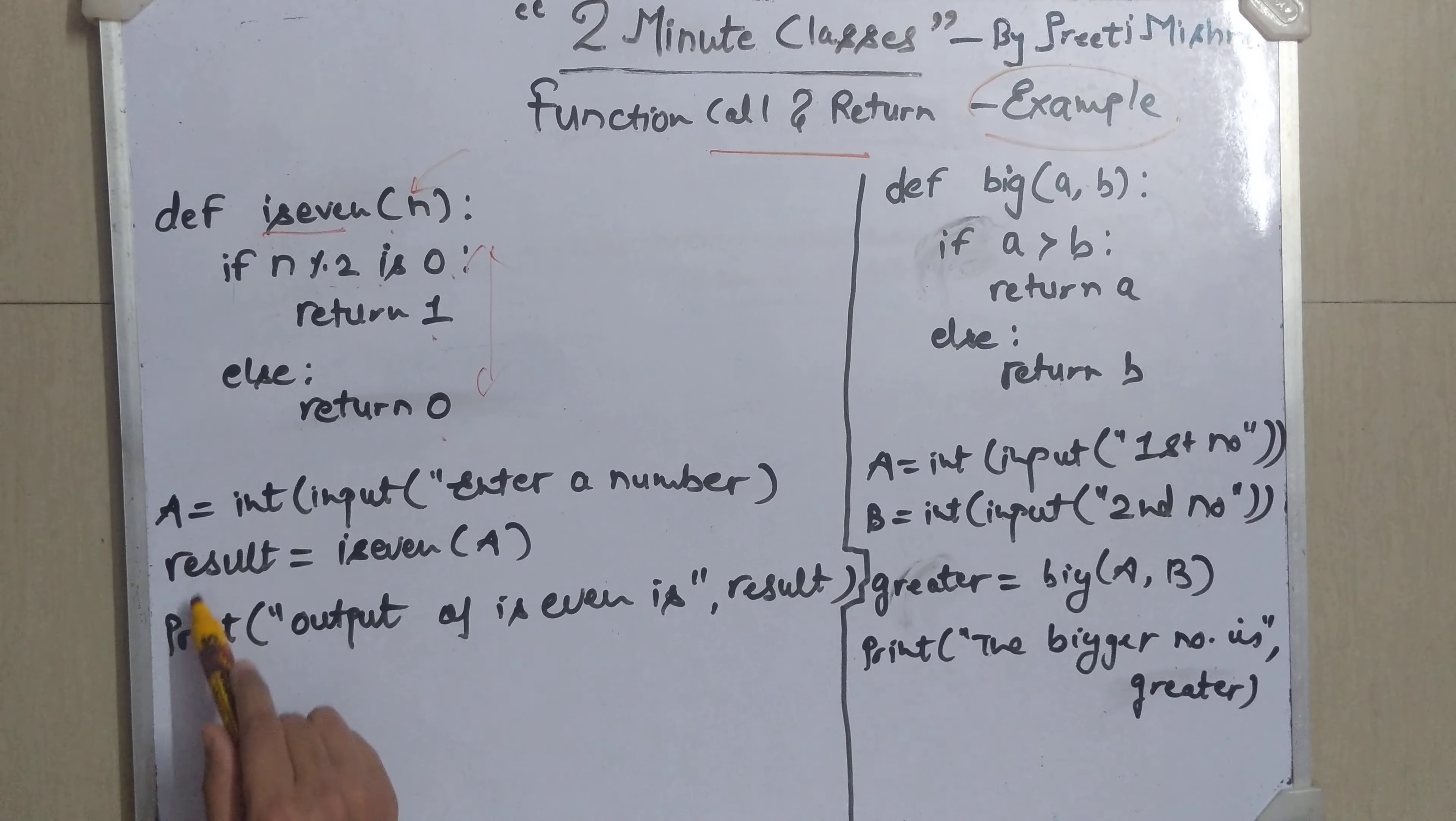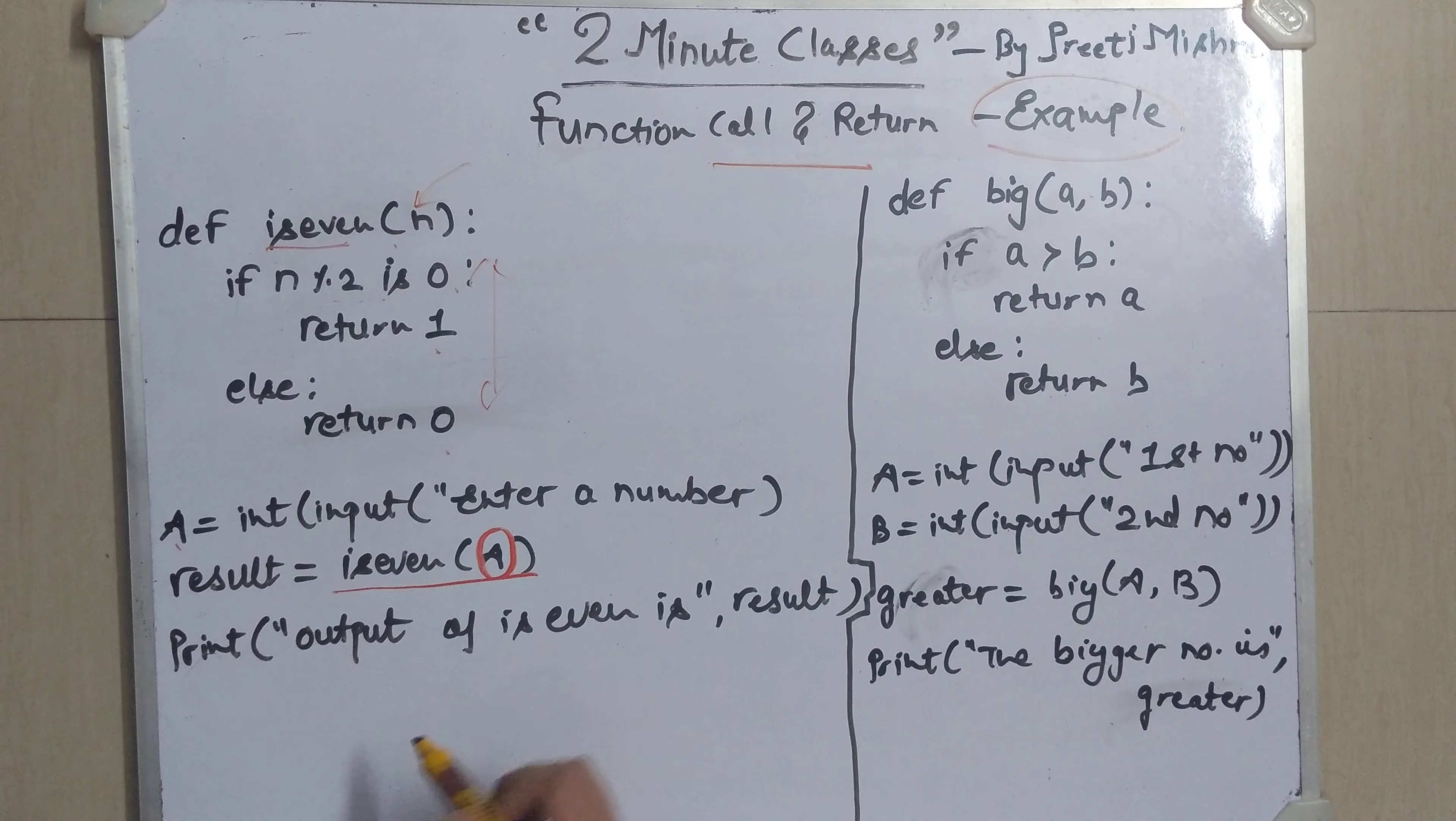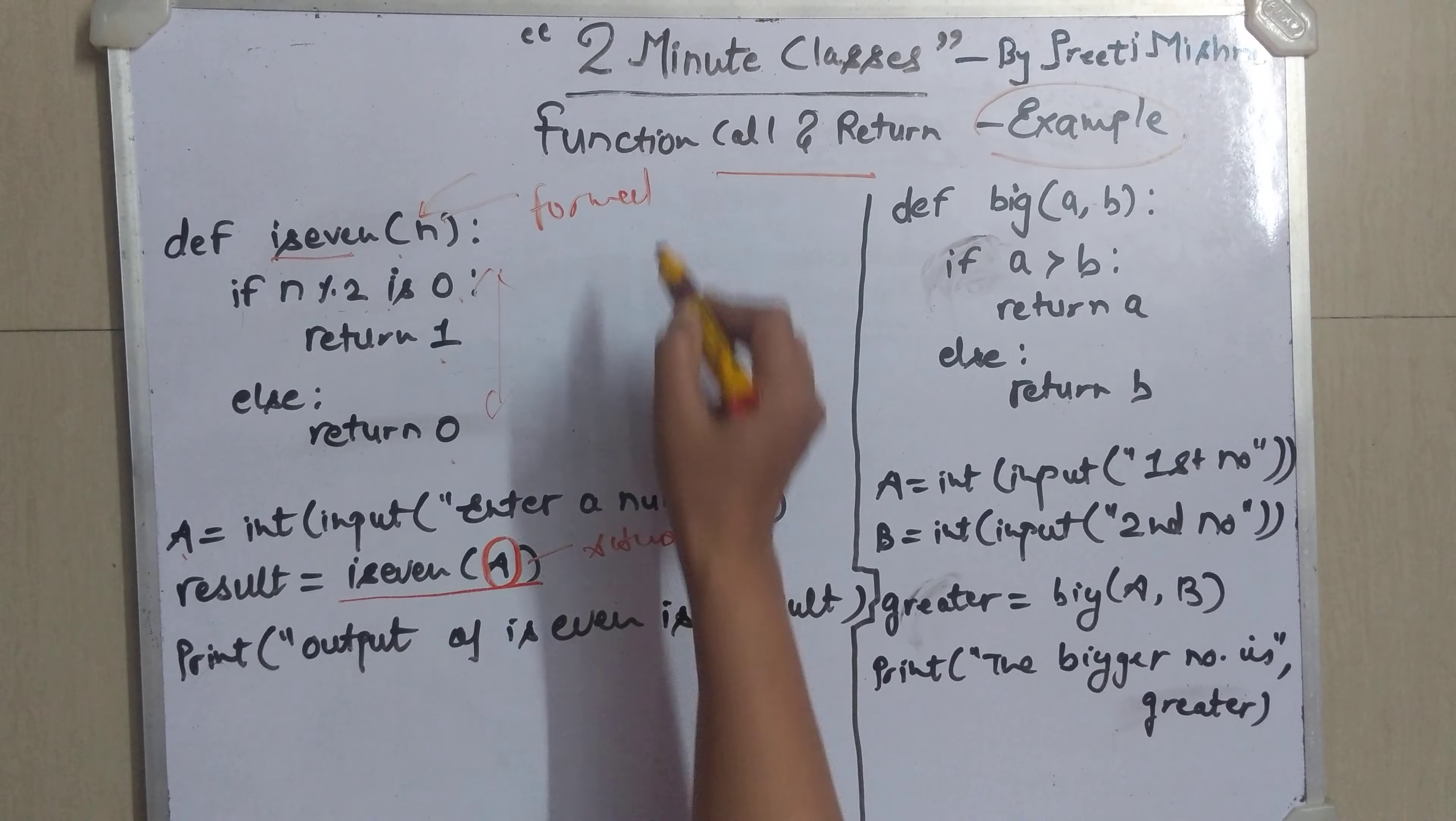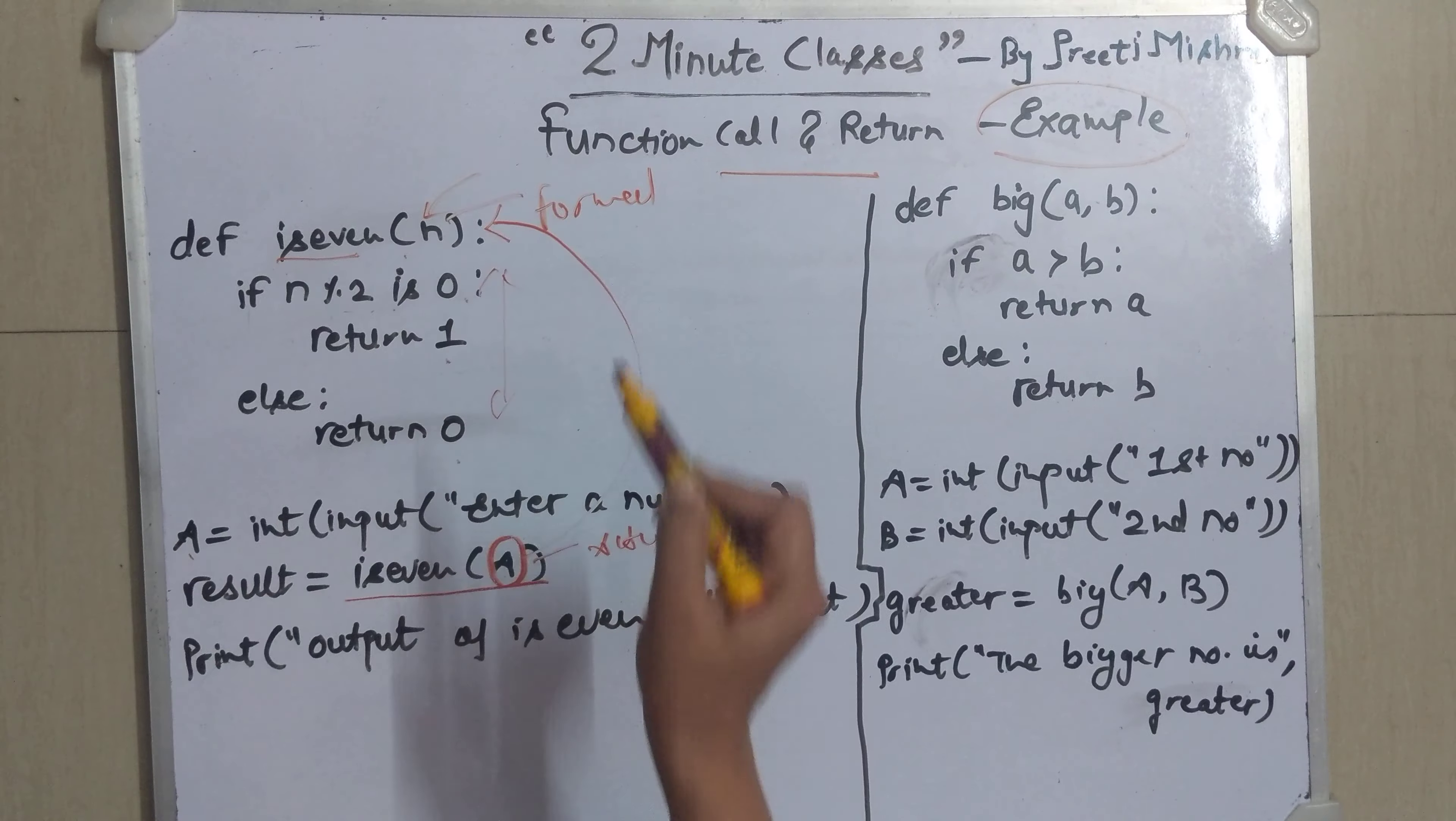And in my program I have taken input a variable which is a and I have called the function isEven with input a. So this is the actual variable and this is the formal variable. So whenever you are doing a function call the value of a will get copied into n.